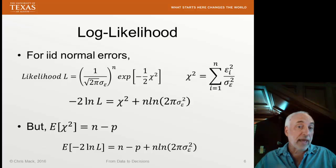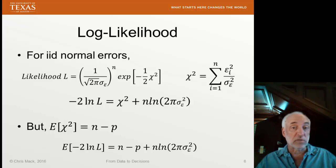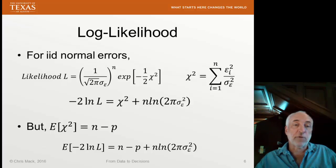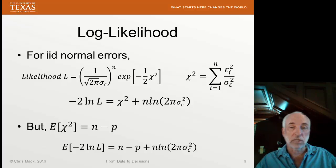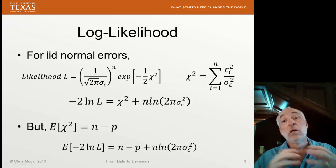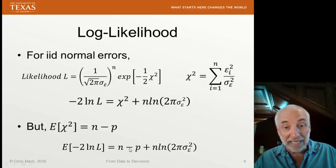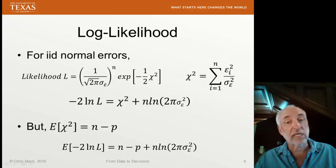But remember that if all the assumptions of my ordinary least-square regression are true, we know the expectation value of chi-square, because chi-square will be chi-square distributed. So the expectation value will be n minus p, where p is the number of parameters in the model. Therefore, the expected value for minus 2 times the log likelihood is shown here, n minus p plus this n log term as well. What happens when I add more parameters to the model? Well, you first of all get a straight minus p phenomena, but also adding more parameters to the model should make the variance of the residuals get smaller. Now, that's the log likelihood piece.